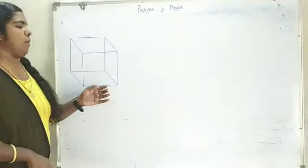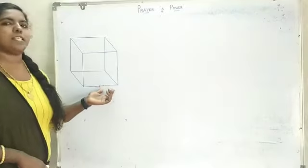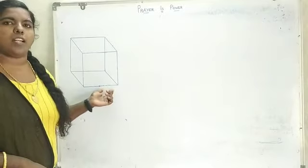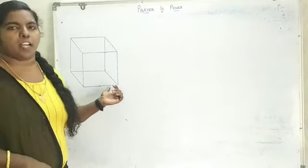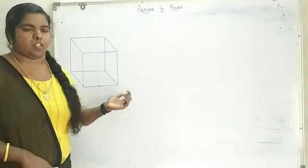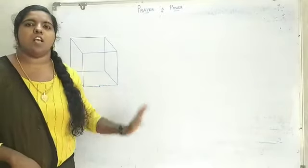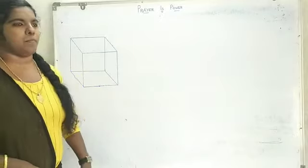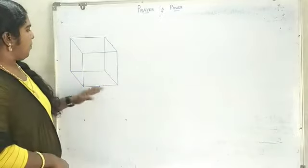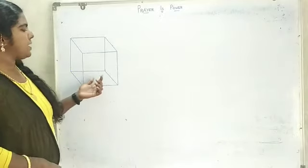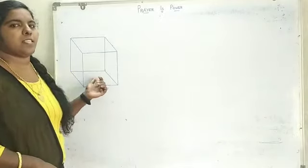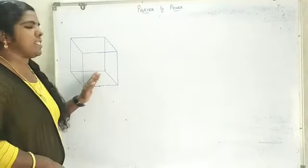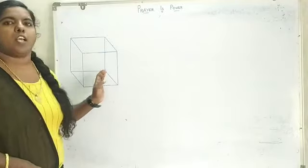This is a cube. A cube is a solid geometrical object. A cube has 6 faces, and each face of a cube is a square.